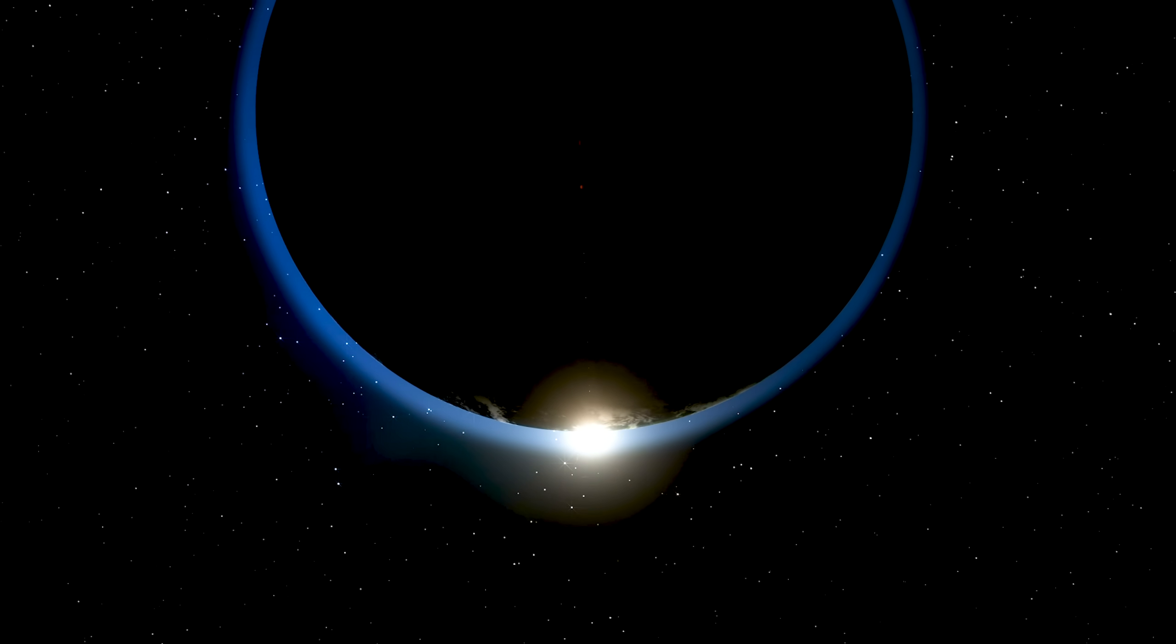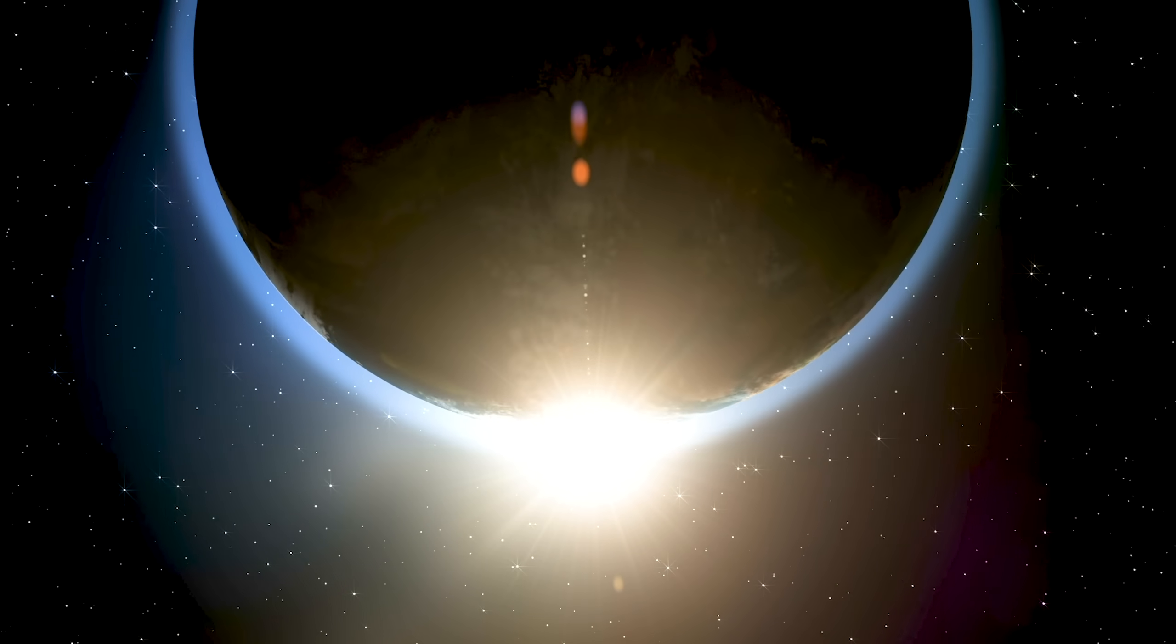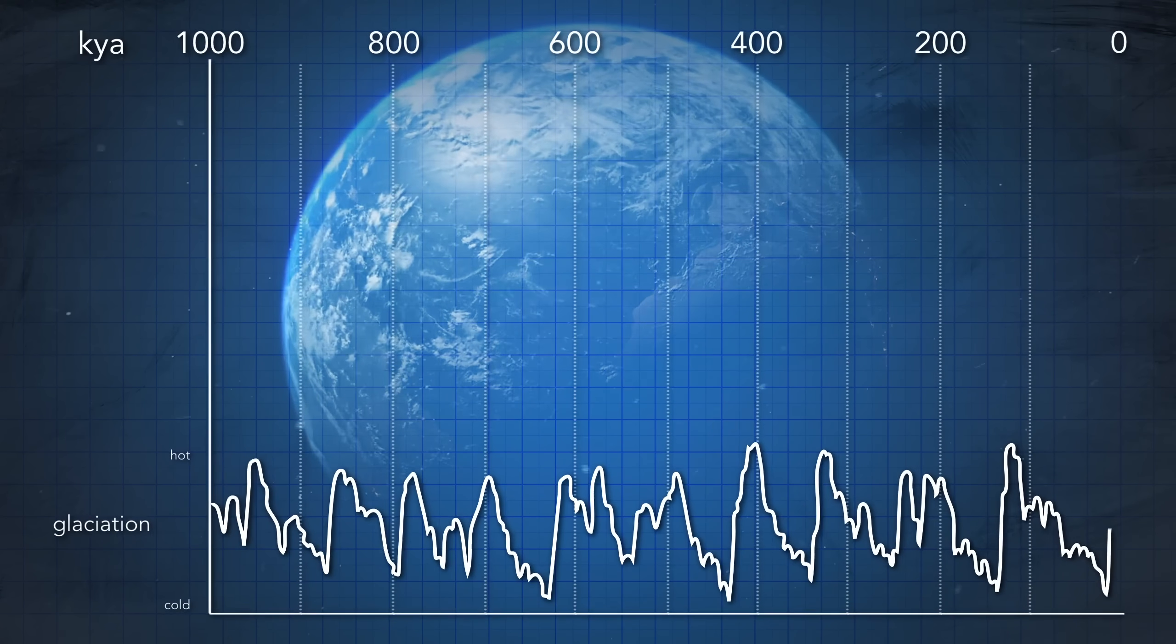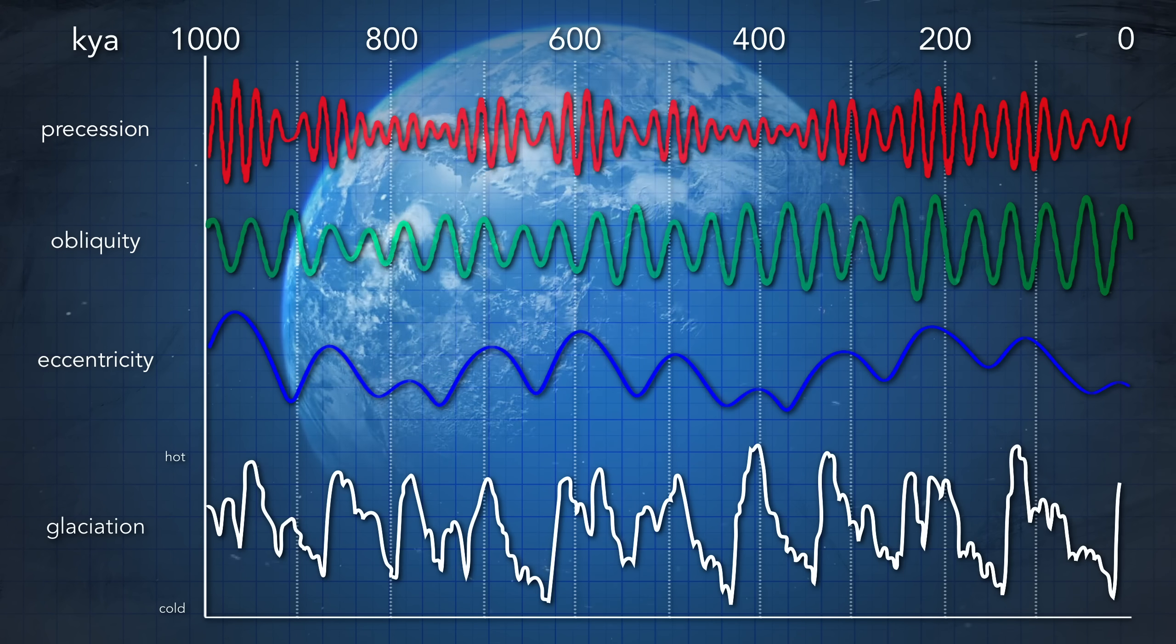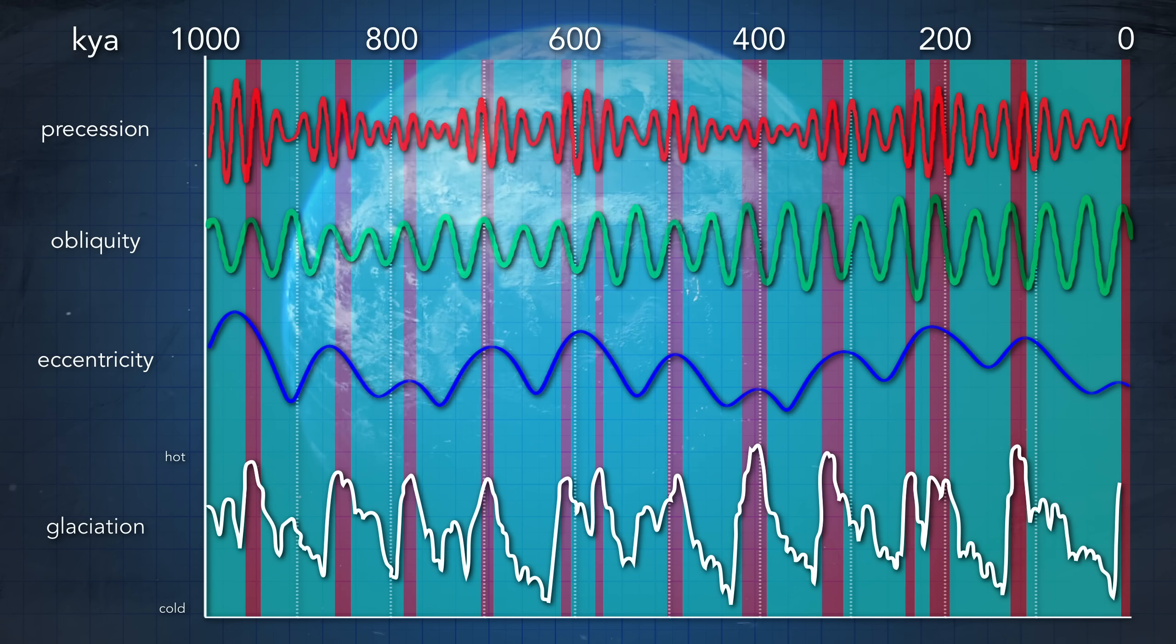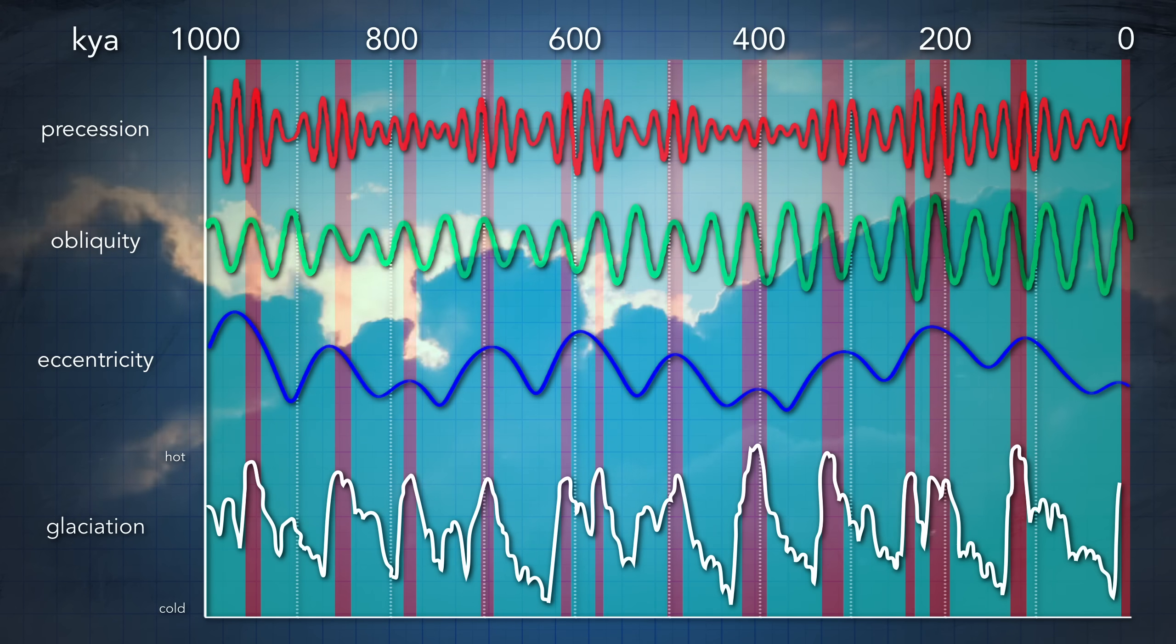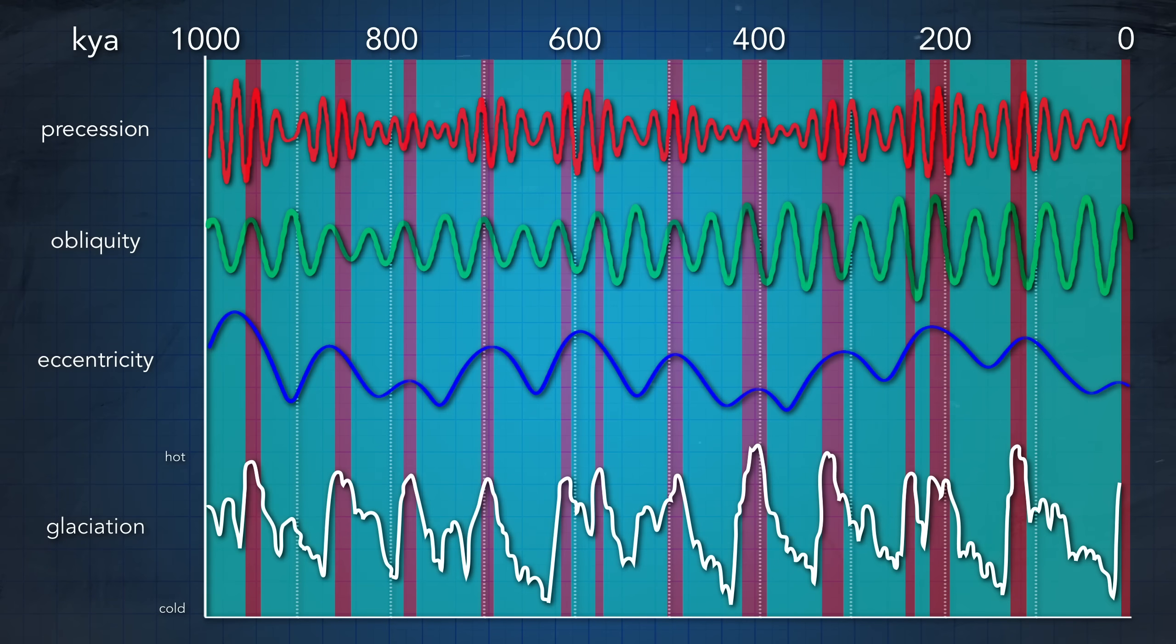The cause of this glacial-interglacial cycle has to do with the way, or ways, the Earth orbits around the Sun. The Earth's orbit periodically changes in three main ways: precession, obliquity, and eccentricity. Now, correlating any one of these cycles to the glacier-interglacial patterns is difficult because they all happen simultaneously, and the effects of one may either cancel out or exaggerate the effects of another. But, simply put, we can see that the Earth's relation to the Sun is the source of cyclical changes to the Earth's climate.